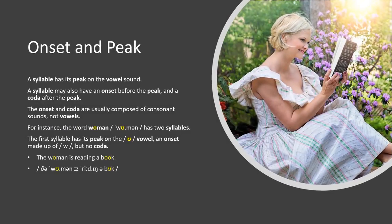A syllable has its peak on the vowel sound. A syllable may also have an onset before the peak, and a coda after the peak. The onset and coda are usually composed of consonant sounds, not vowels. For instance, the word 'woman' has two syllables. The first syllable has its peak on the vowel, an onset made up of W, but no coda.